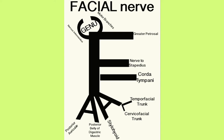And then the posterior auricular nerve — this goes back and supplies both sensory portions to part of the ear, and in pretty much most of us it has some sort of auricular motor supply, where it serves the motor muscles of the ear, the auricular muscles, to a greater or lesser degree in different people.